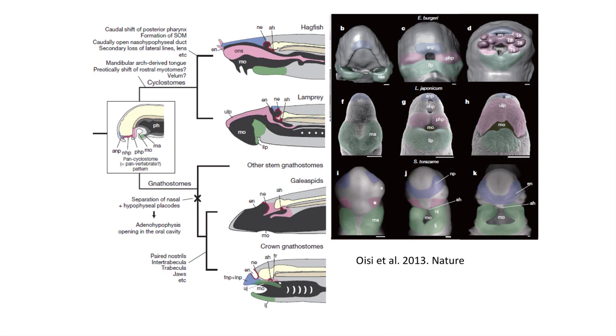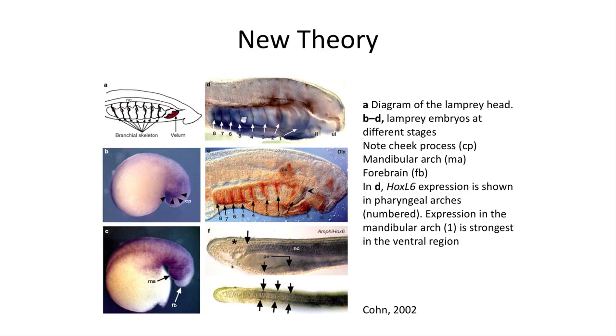Recently, using developmental genetics, scientists have noticed that the embryological tissues — the neural crest cells that form the jaws in early jawed fish — are also found in the lips surrounding lamprey mouths. A newer idea was suggested that these embryological cells turn on key genes in jawed vertebrates so that jawed features would develop only in the lower half of the mouth to form the jaw.